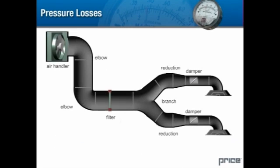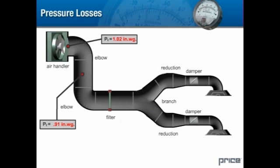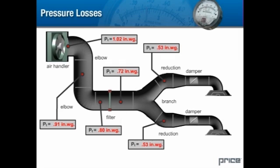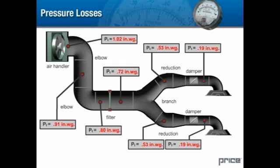If we examine a simple HVAC system, we will find that the highest total pressure occurs at the air handling unit. This is where the static pressure needed to force air throughout the system is created. As we move downstream, we will see that there is a series of pressure drops across each transition until we get to the diffuser. As air leaves the diffuser, it reaches the same pressure level as the environment.